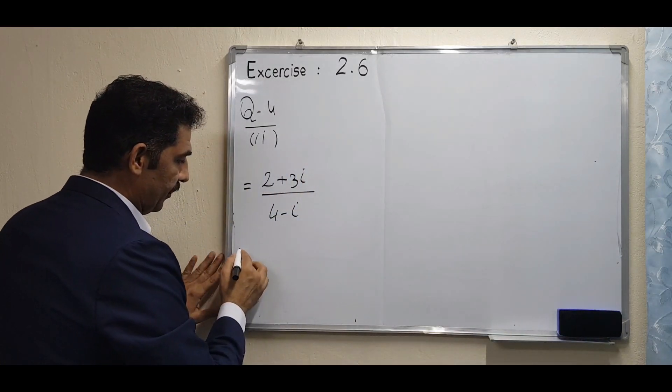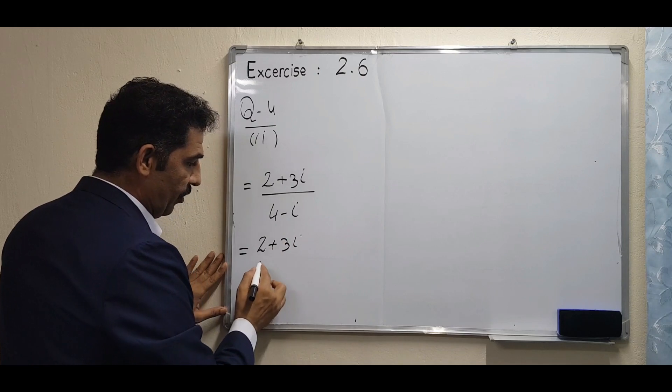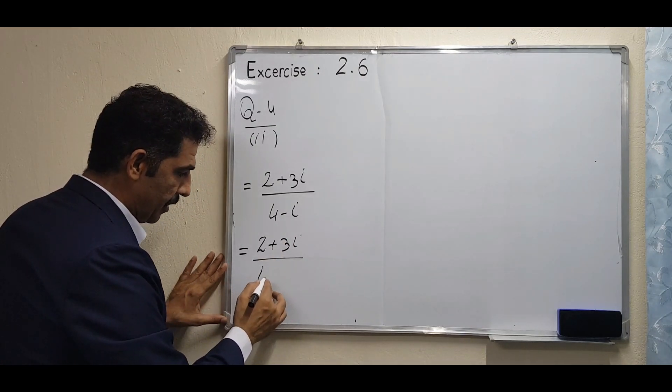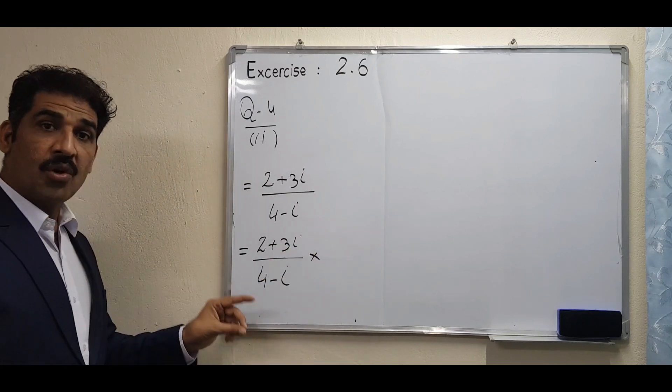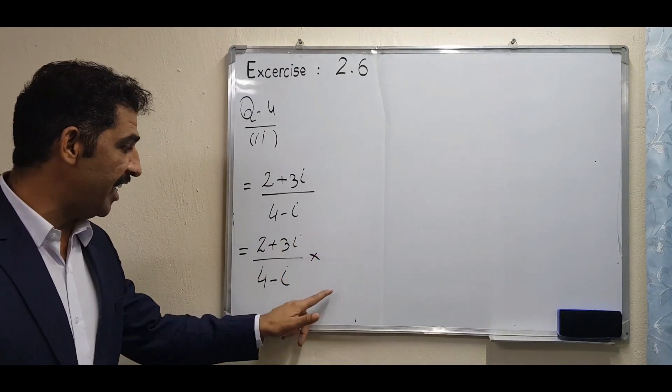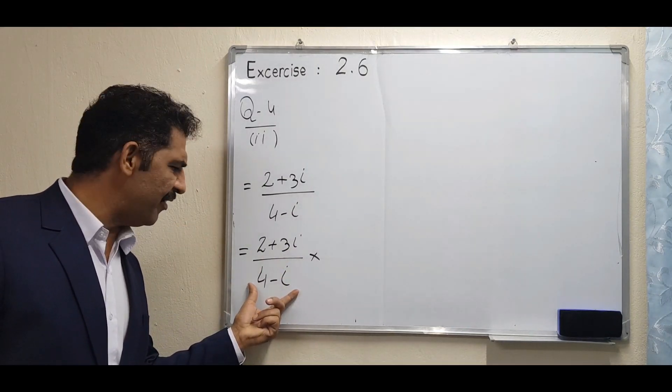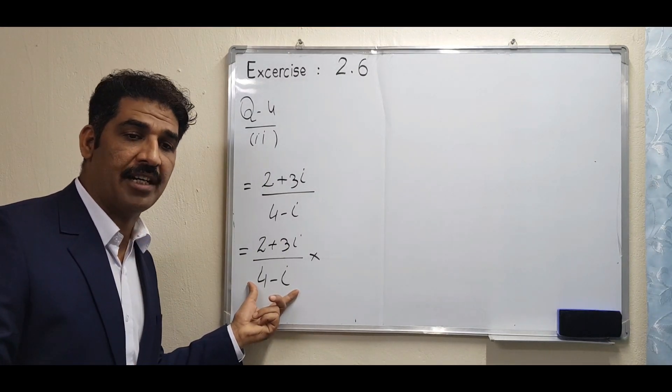The first step is to write (2 + 3 iota) over (4 - iota). First of all, we have to multiply and divide by the conjugate of this denominator. Whenever you see iota in the denominator, you have to eliminate it. The rule is to multiply and divide by its conjugate.